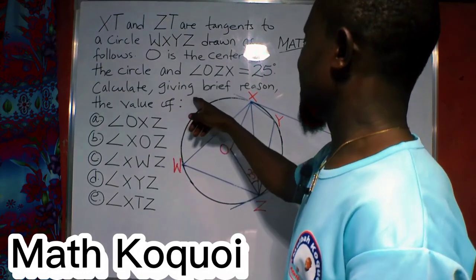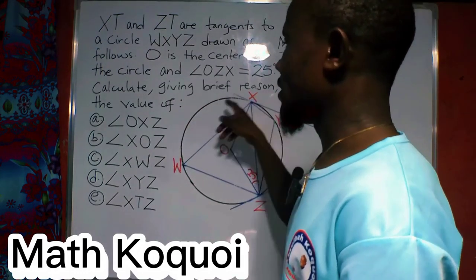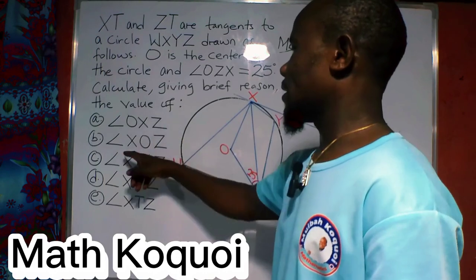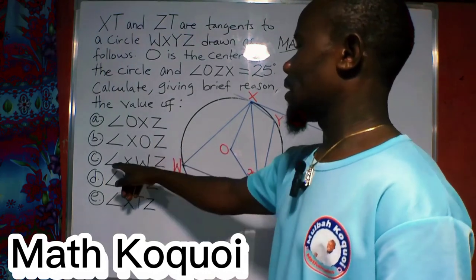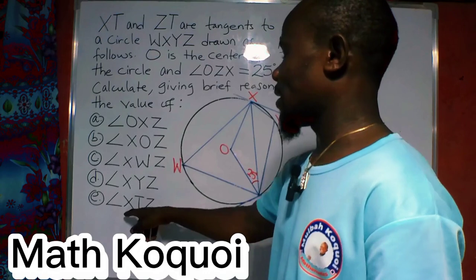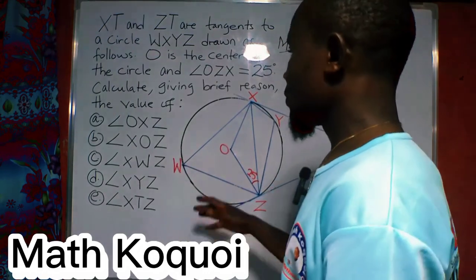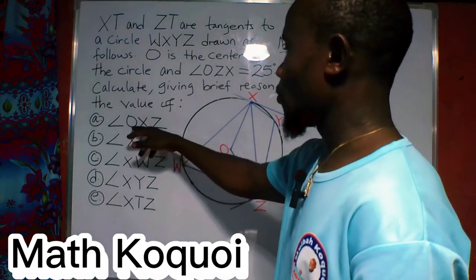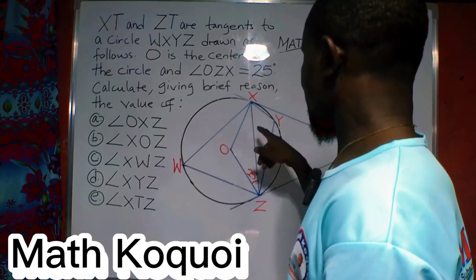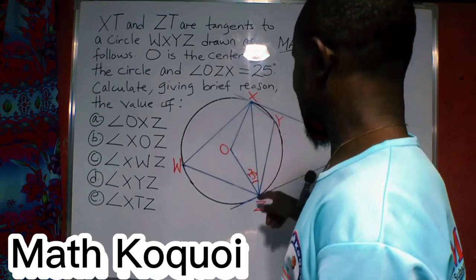Calculate the values of angle OXZ, angle XOZ, angle XWZ, angle XYZ, and angle XTZ. The first thing we are going to find is angle OXZ.